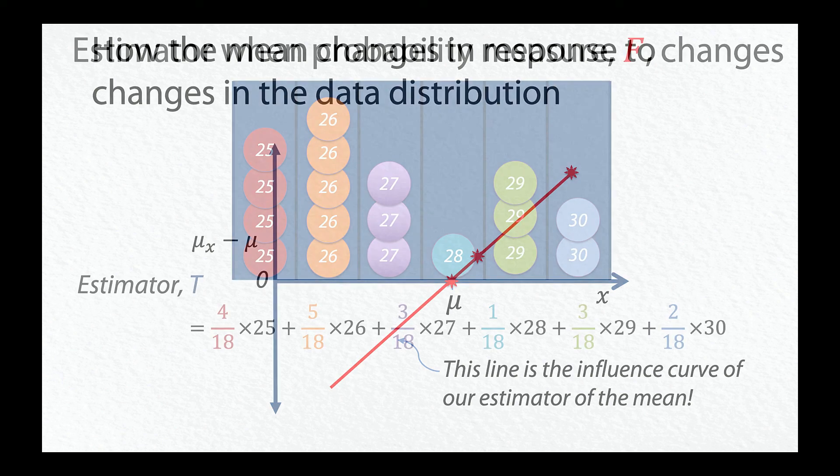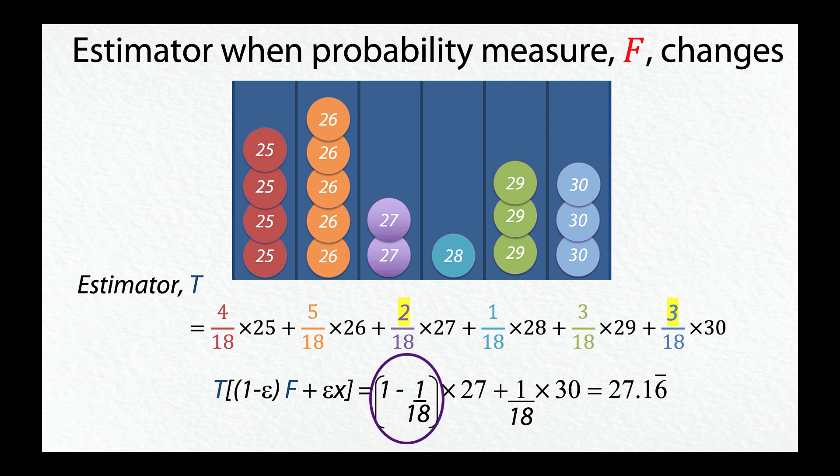Let's examine the effect of a perturbation in our previous example. Suppose one of our observed values of 27 was actually equal to 30 instead. We can think of this as a mixture distribution that is 17/18ths of the original distribution, f, with the remaining 1/18th shifted to the point x equals 30. Let epsilon represent the 1/18th fraction, or more generally, any amount between 0 and 1. We apply estimator t to this mixture distribution to obtain a new estimate, 27.16 repeating.